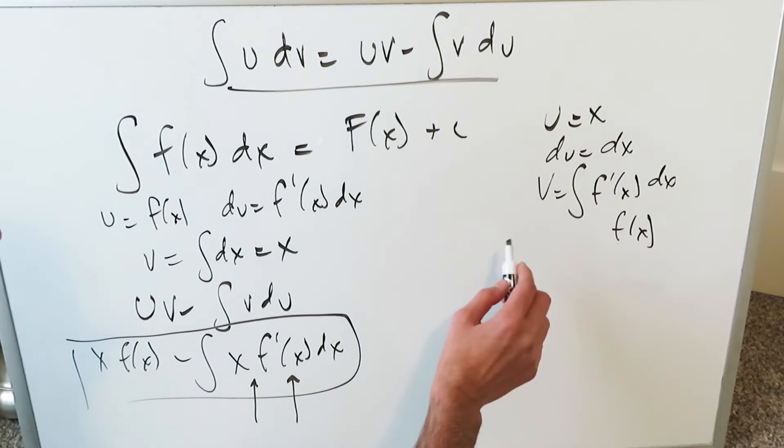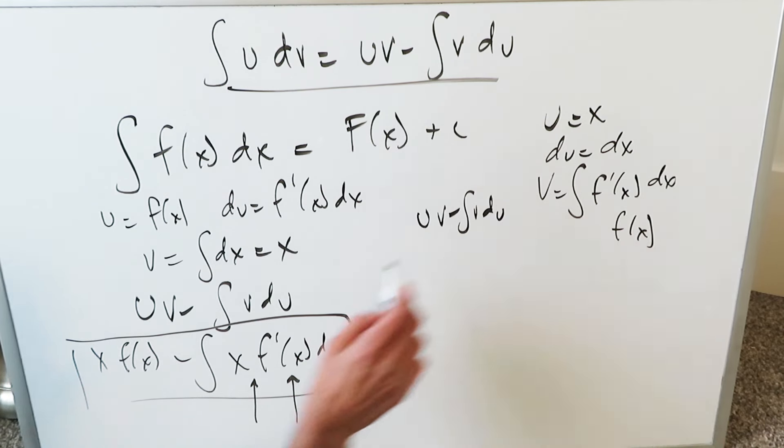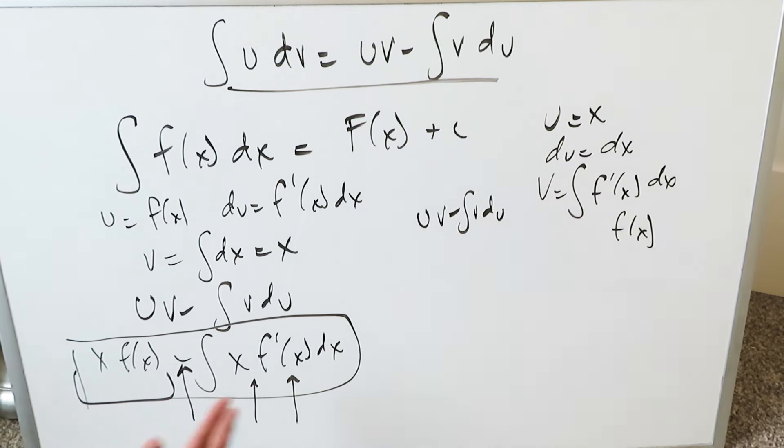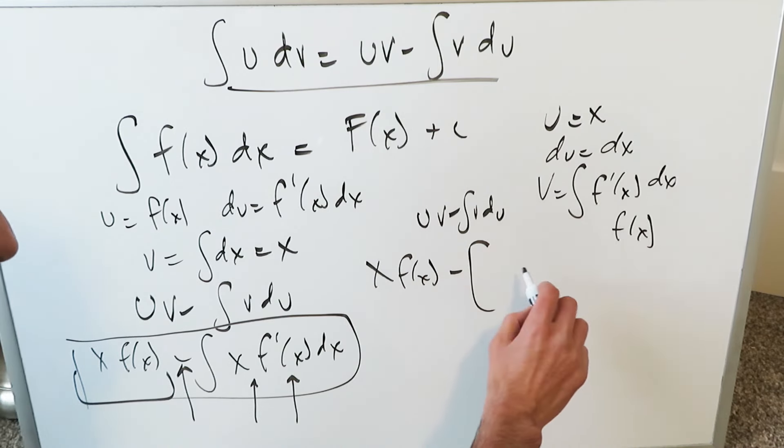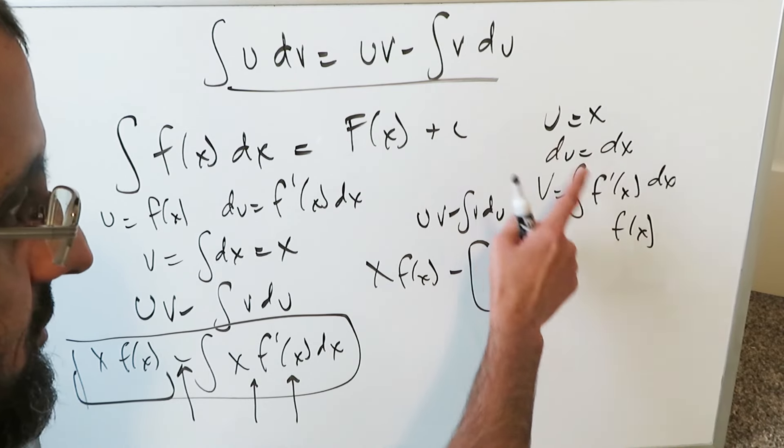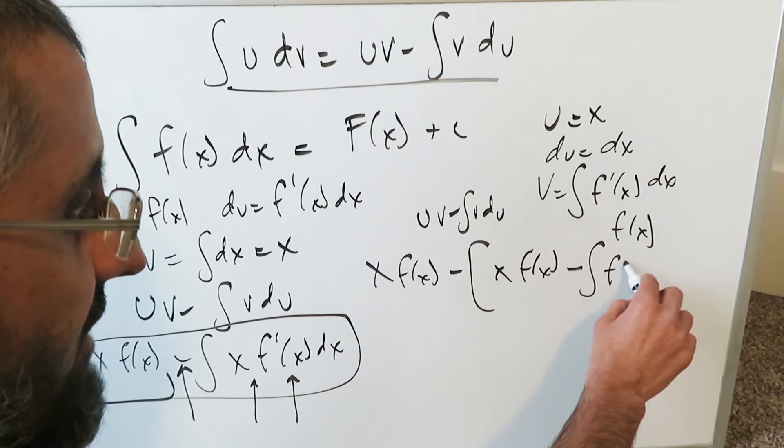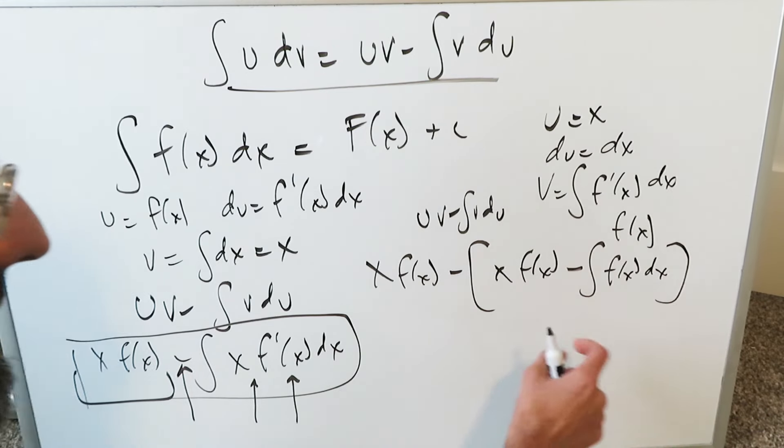Now run these through your next round of uv minus integral v du. Keeping in mind that you still have this and the minus before all of that: x f(x) minus. And now we'll bring this by means of the new round of substitutions, uv: x f(x). See, u and v minus integral v, which is f(x), du, which is right here, dx.